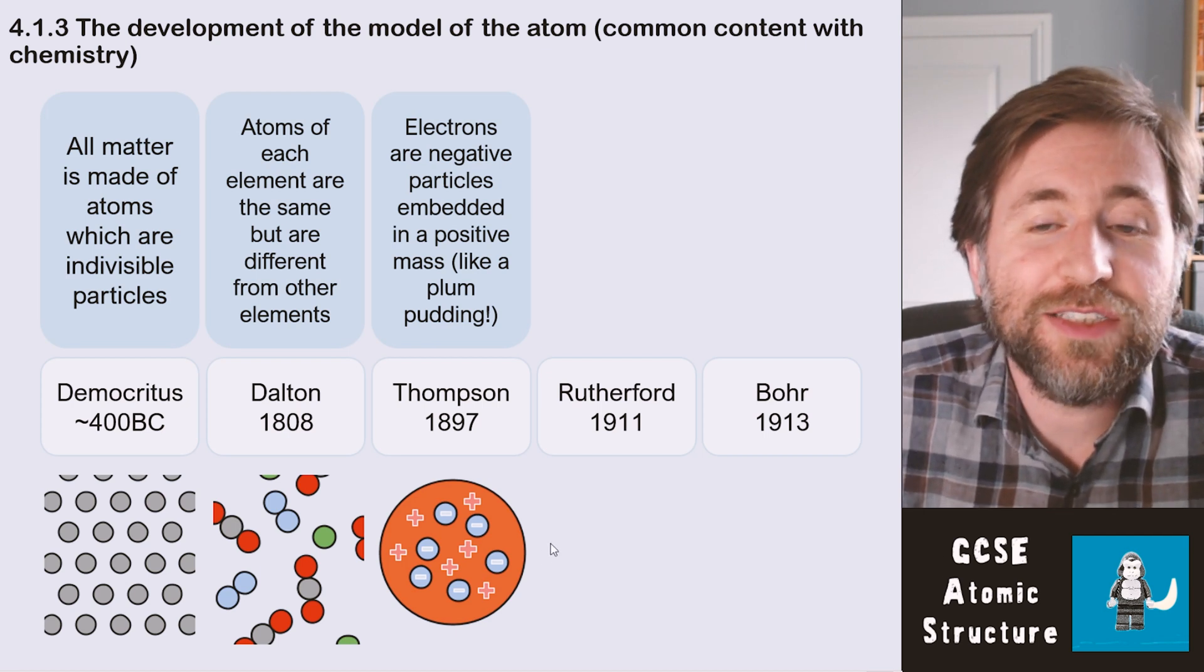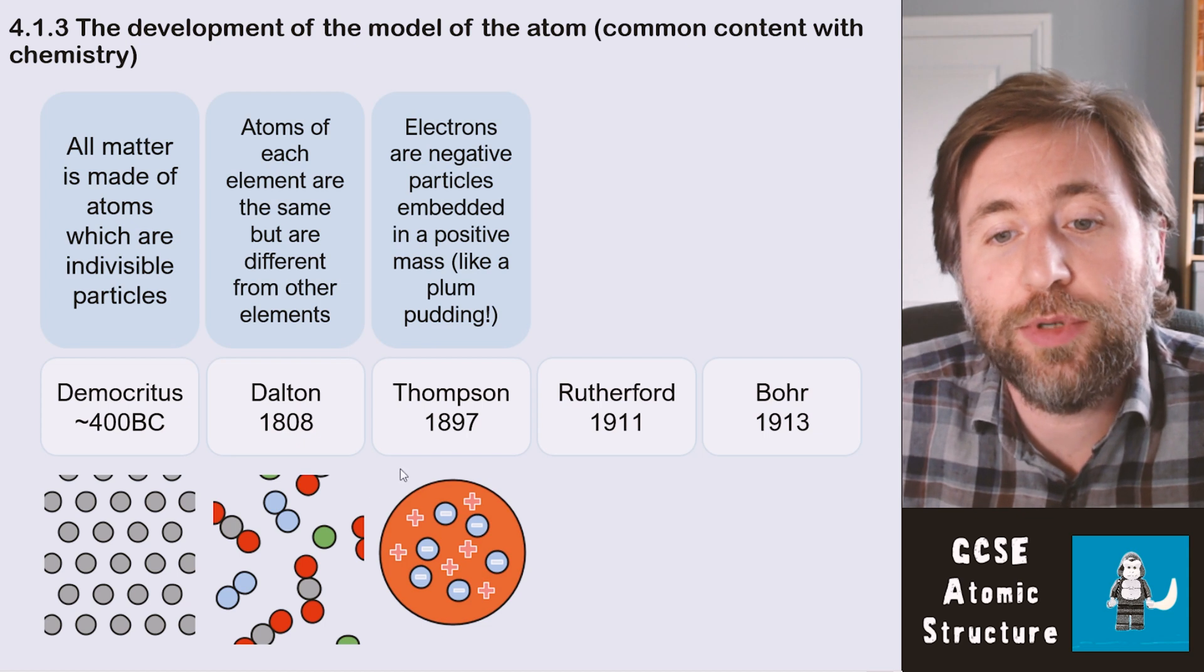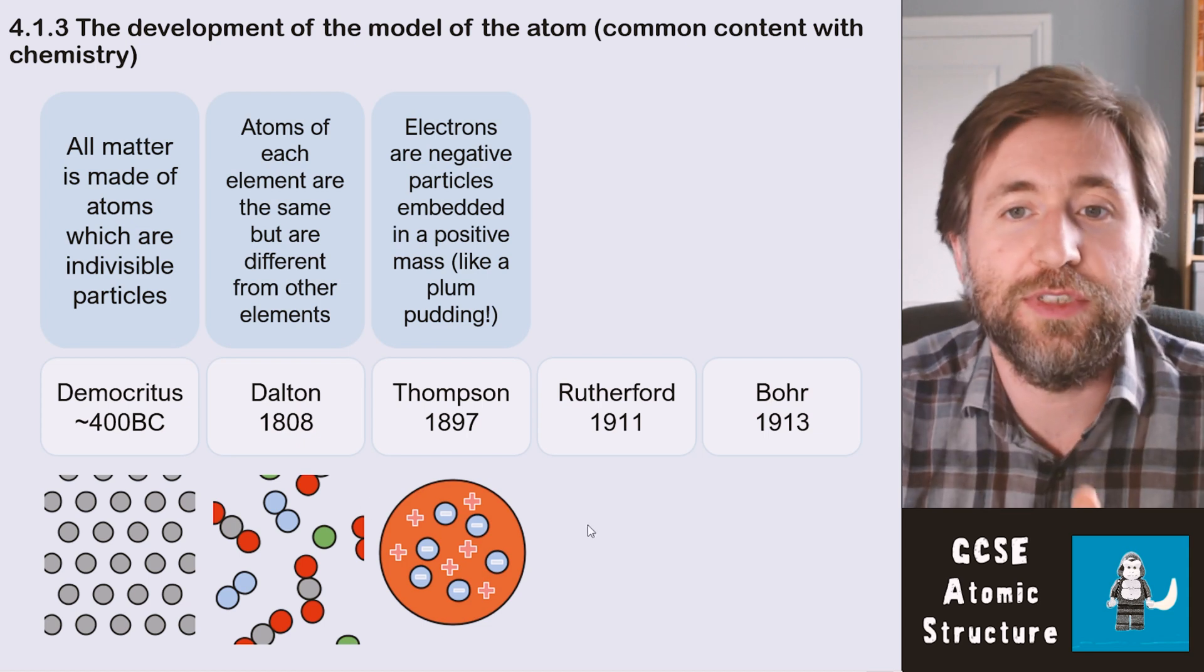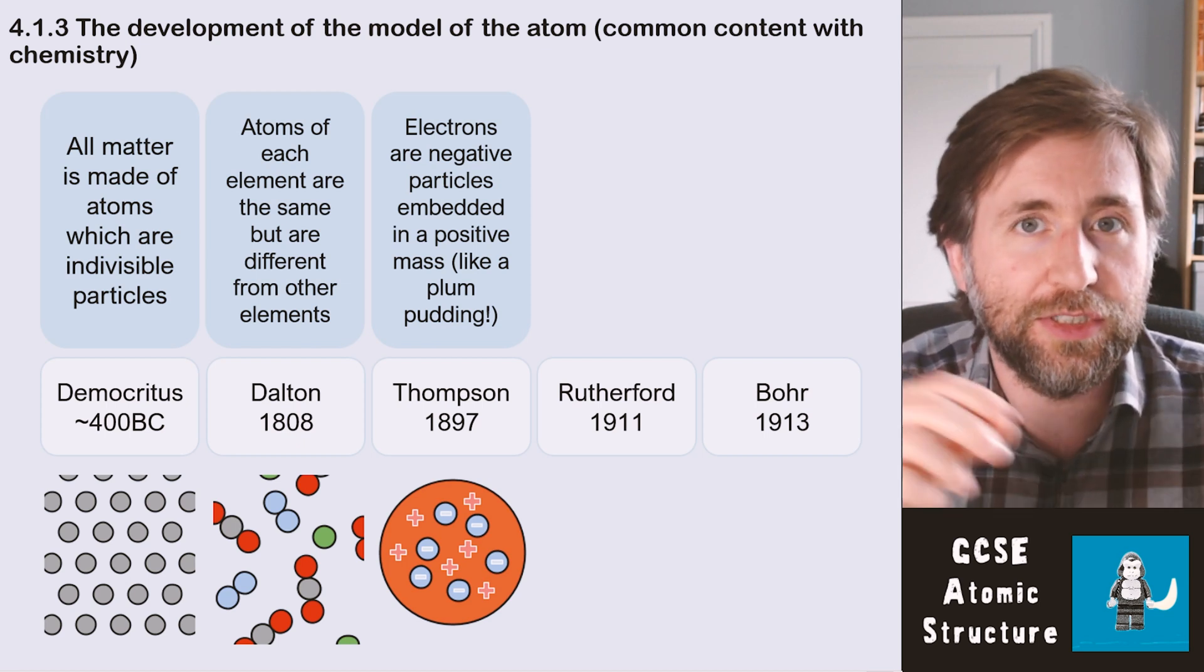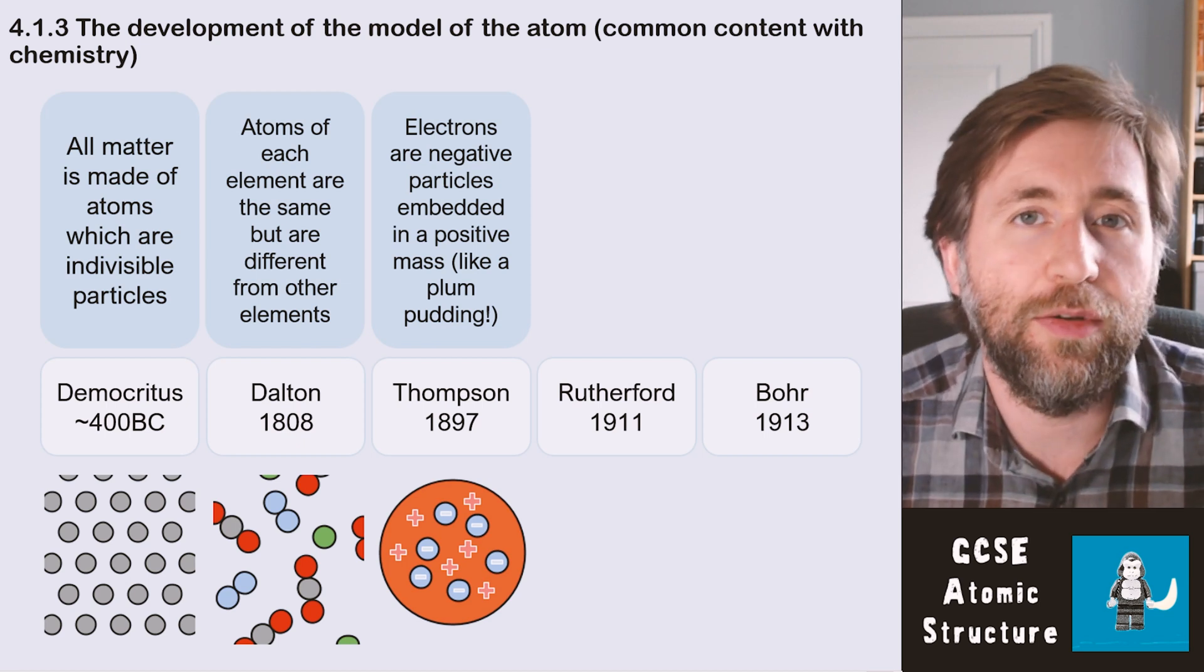So he theorized his model was that the atom was a bit like a plum pudding. It had this positive, kind of cakey stuff—this evenly distributed positive charge—and within that there were some electrons that were the negatively charged particles that could be taken out of the atom.